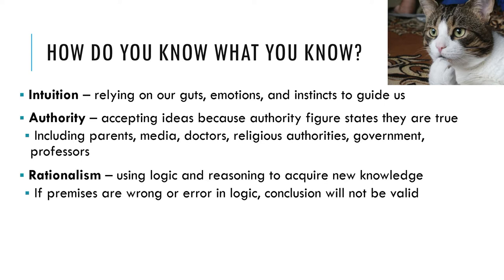Rationalism. Rationalism involves using logic and reasoning to acquire new knowledge. Using this method, premises are stated and logical rules are followed to arrive at a sound conclusion. For instance, if I am given the premise that all swans are white, and the premise that this is a swan, then I can come to the rational conclusion that this swan is white without actually seeing the swan. The problem with this method is that if the premises are wrong or there's an error in logic, then the conclusion will not be valid. For instance, the premise that all swans are white is incorrect — there are black swans in Australia.